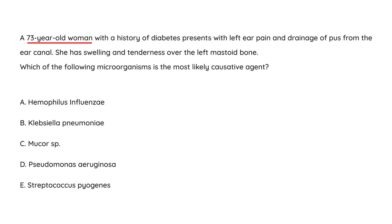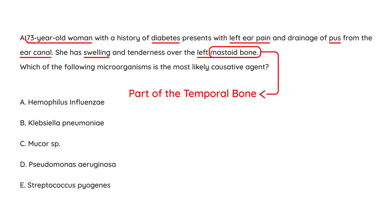Clinical vignette 3: A 73-year-old woman with a history of diabetes presents with left ear pain and drainage of pus from the ear canal. She has swelling and tenderness over the left mastoid bone, which is part of the temporal bone. Being elderly and diabetic, she is at high risk for malignant otitis externa, and her symptomatology is consistent with that diagnosis. The most likely causative organism is Pseudomonas.